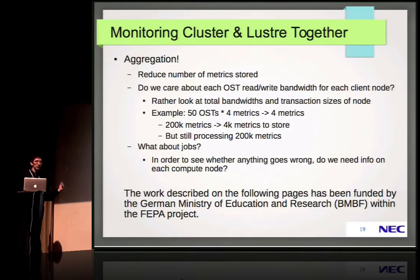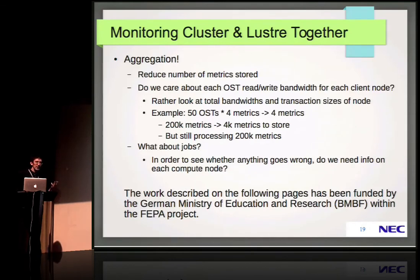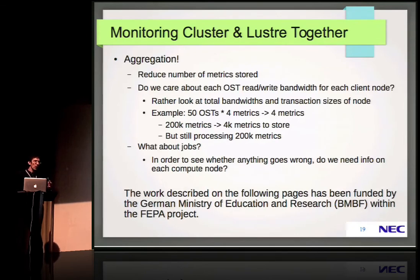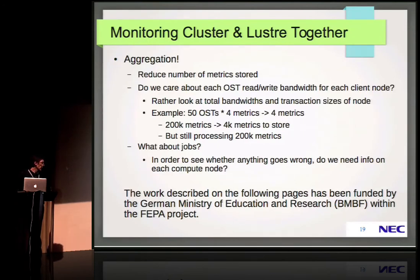What we do is aggregate over the OST metrics — we add up all the OST metrics to just have bandwidths per client node. That reduces the number of metrics by a factor of 50 in the example with 50 OSTs. What about jobs? In order to see whether anything goes wrong, do we need information on each compute node participating in the job? It's nice to have, and we mostly store them anyway, but can we see something useful if we have a 1,000-node job? Do we draw 1,000 curves? Then you probably can't see anything anymore.